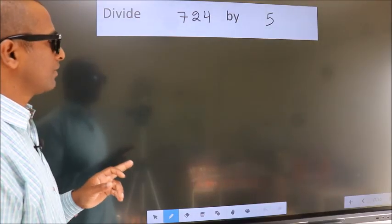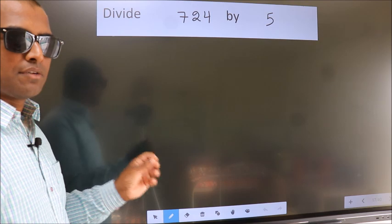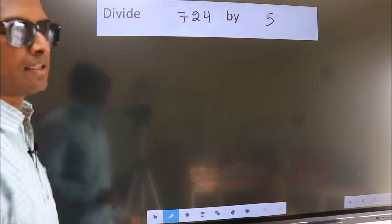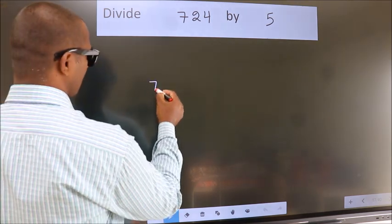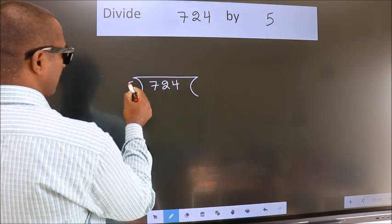Divide 724 by 5. To do this division, we should frame it in this way. 724 here, 5 here.